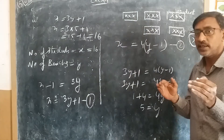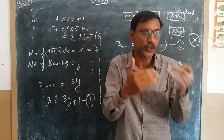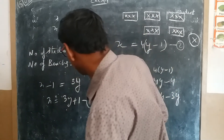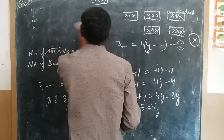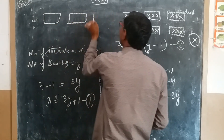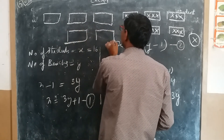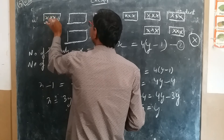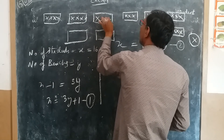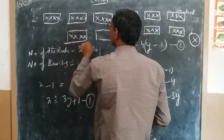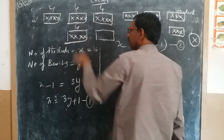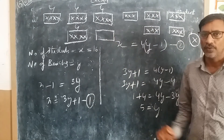Now suppose 4 students sit in each bench: total of 16 students. We have 5 benches — the first bench, second bench, third bench, fourth bench, and fifth bench. Placing 4 students in each of the first 4 benches gives 16 students, and the fifth bench is left empty. So one bench is left — the answer is verified.